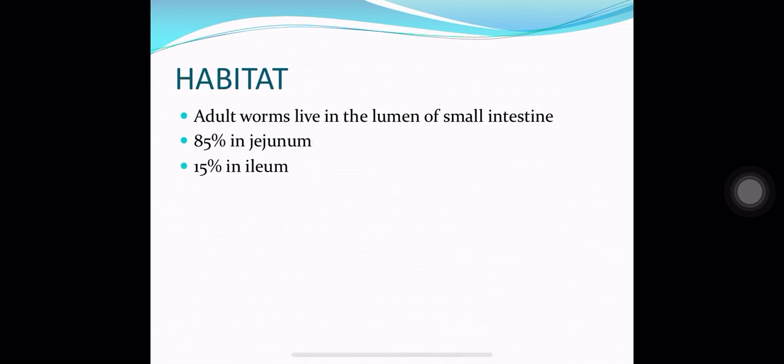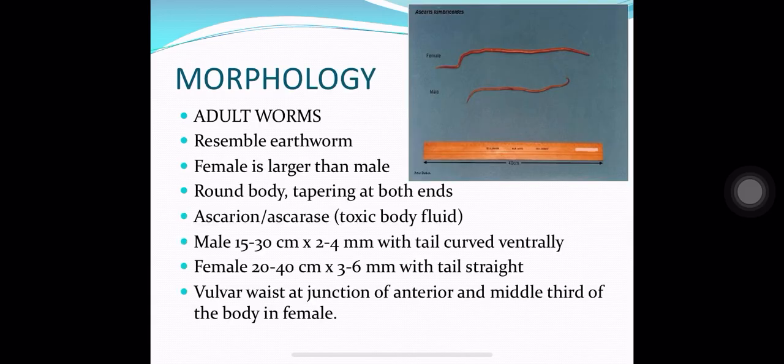The habitat of Ascaris Lumbricoids — the adult worms live in the lumen of the small intestine: 85% in the jejunum and 15% in the ileum.